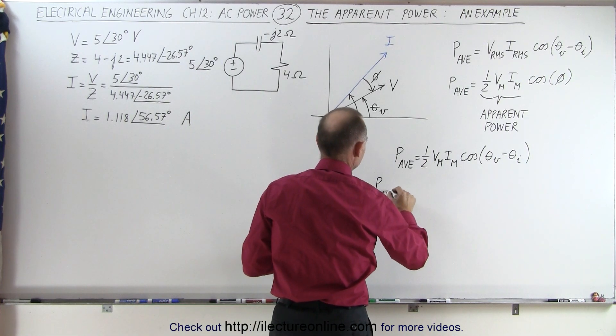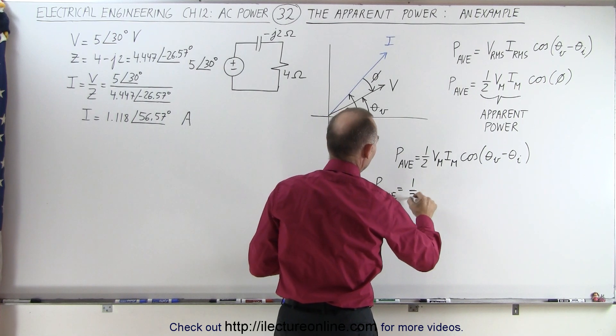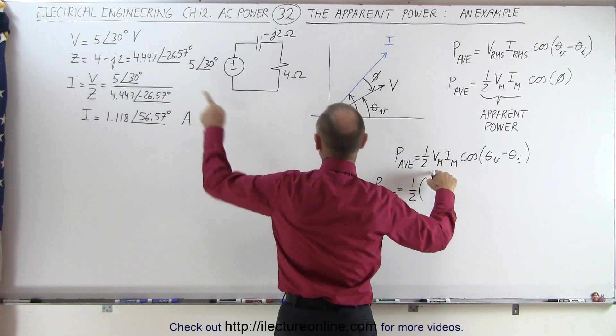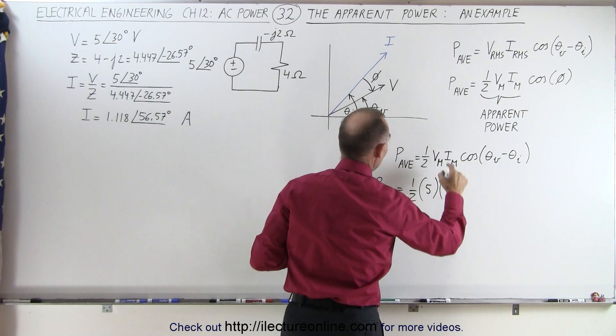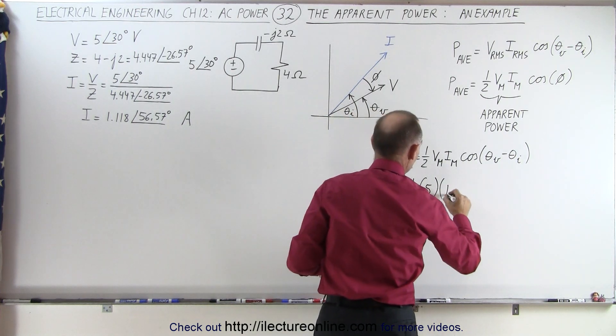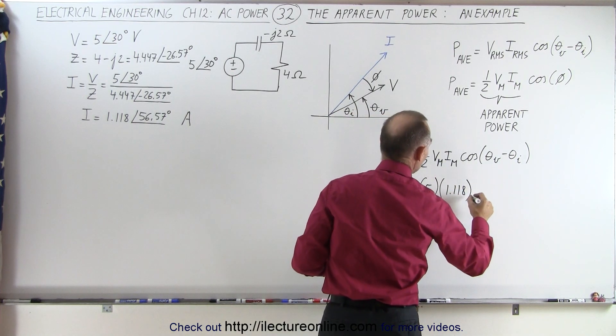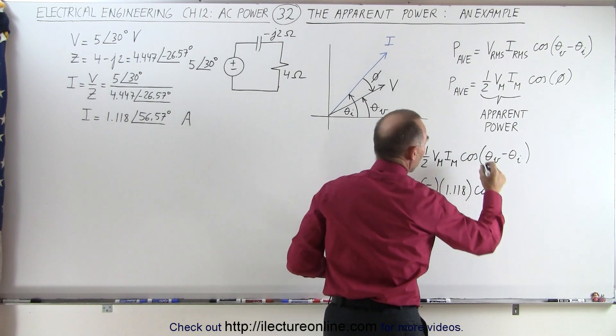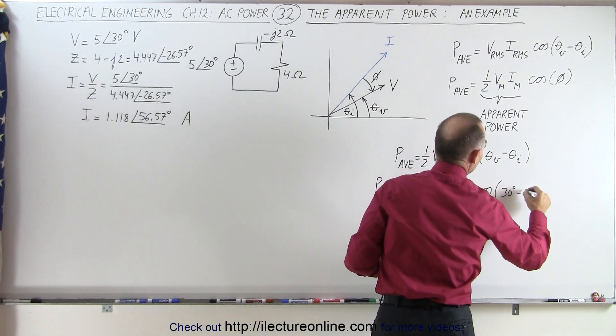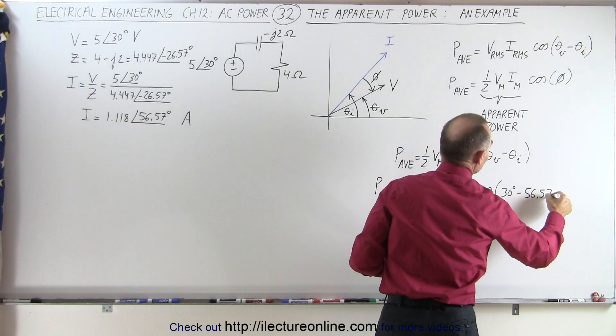The average power is equal to 0.5 times the maximum voltage of 5 volts, the maximum current of 1.118 amps, times the cosine of 30 degrees minus 56.57 degrees.